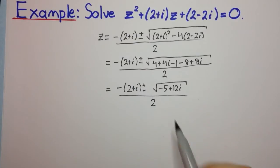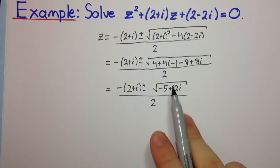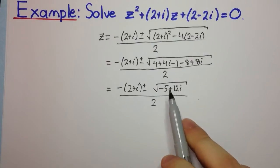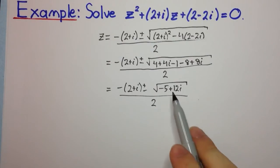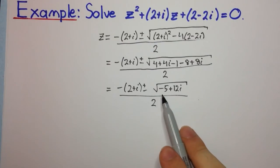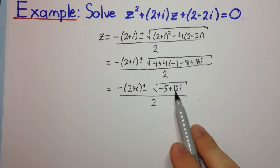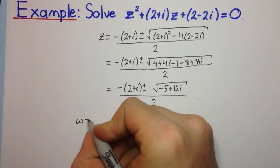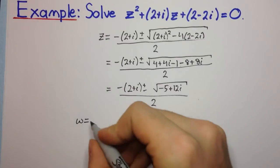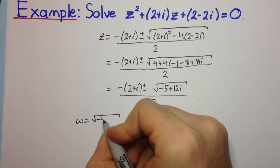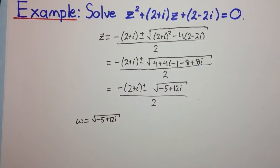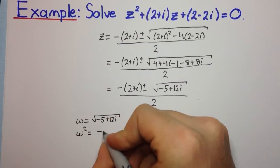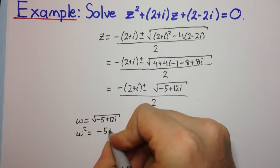We can simplify further: 4 minus 8 minus 1 gives minus 5, and 4i plus 8i gives plus 12i. So we're taking the square root of (minus 5 + 12i), all over 2. Let's say that omega is the square root of negative 5 + 12i, so omega² equals negative 5 + 12i.